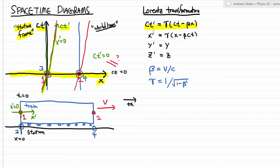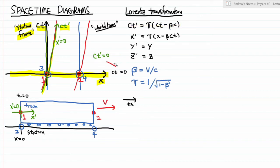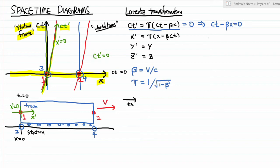Let's go through a quick mathematical derivation. I want to find the set of points where ct prime equals zero. Taking the Lorentz transformation expression and setting it equal to zero, I can divide both sides by gamma to cancel that out, giving ct minus beta x equals zero. Solving for ct, since my graph has ct along the y-axis: ct equals beta x. This is an equation that defines a line on this graph — essentially y equals beta x, a line with slope beta.